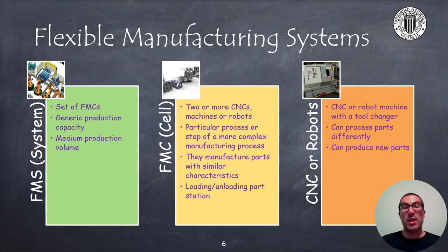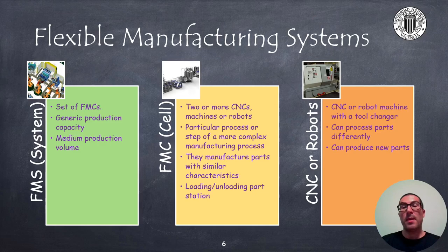These types of cells usually include loading and unloading stations and a PLC to coordinate machines. A cell lacks the global vision of a centralized computer monitoring overall production. This is what a flexible manufacturing system provides — a set of flexible manufacturing cells able to adapt production to demand changes in a very generic way, while keeping a medium production volume. The flexibility lies in the fact that machines can be reprogrammed or modify their work, but always within what was originally planned.